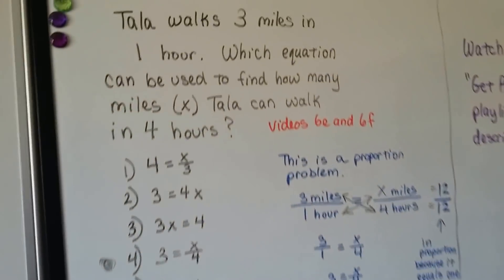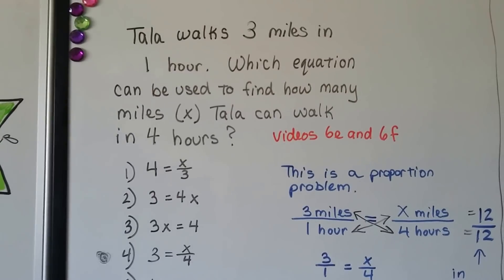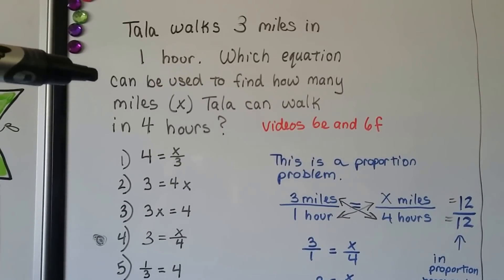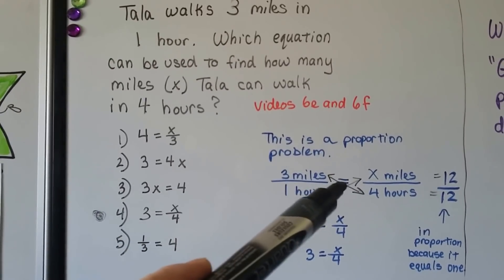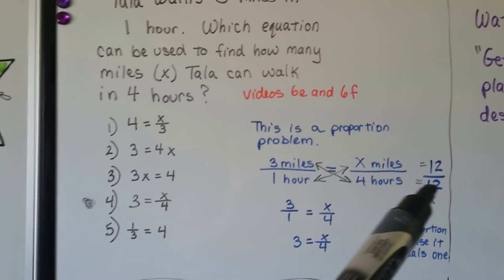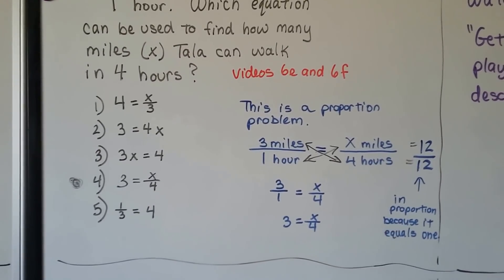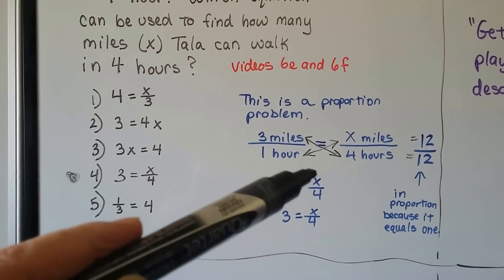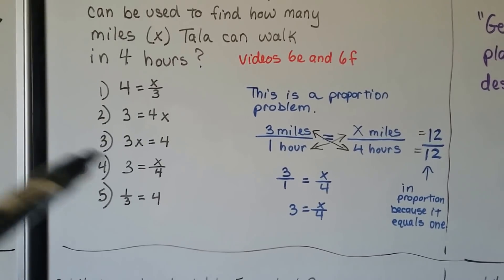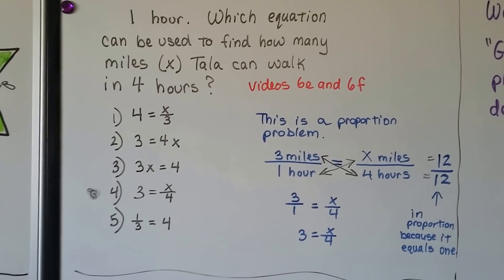We have a word problem: Tala walks 3 miles in 1 hour. Which equation can be used to find how many miles x Tala can walk in 4 hours? This is a proportion problem — 3 miles over 1 hour equals x miles over 4 hours. We need them to equal a 1. 3 times 4 is 12, and 1 times x must equal 12, so x is 12. We have 3 over 1 equals x over 4, and since 3 over 1 is just 3, the equation is 3 equals x divided by 4 — answer 4 is correct.